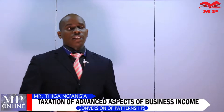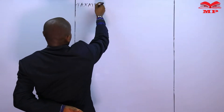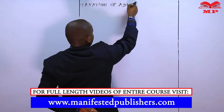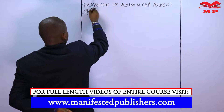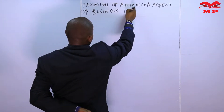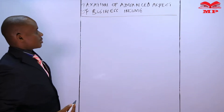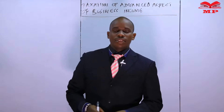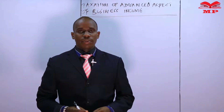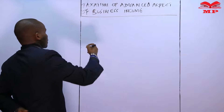Hello learners, welcome again to Manifested E-Learning Platform. Today we are going to continue with the advanced aspect of business income. We consider the taxation of those specialized entities which were not covered in the previous level of taxation or public finance.